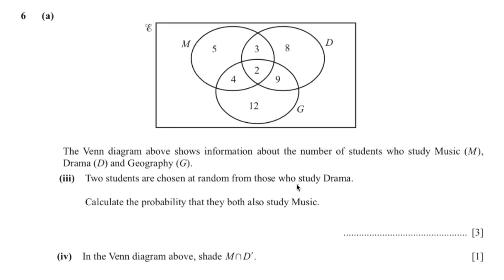So this question is 2 students are chosen at random from those who study drama and those who study music. So this is the amount of those who study drama. So that is 22. So we know that that would be 22.